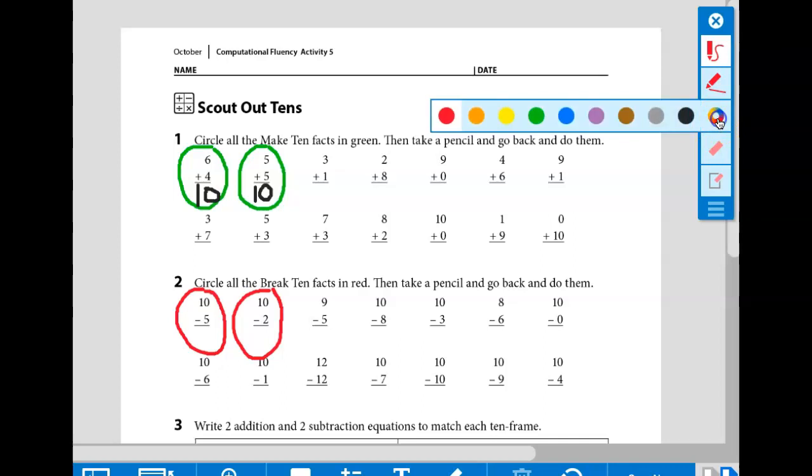After you circle all of your break 10 facts, you'll solve them. 10 minus 5 equals 5. 10 minus 2 equals 8. Solve all of these equations.